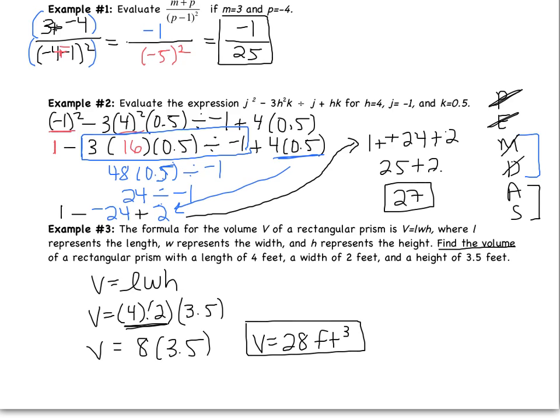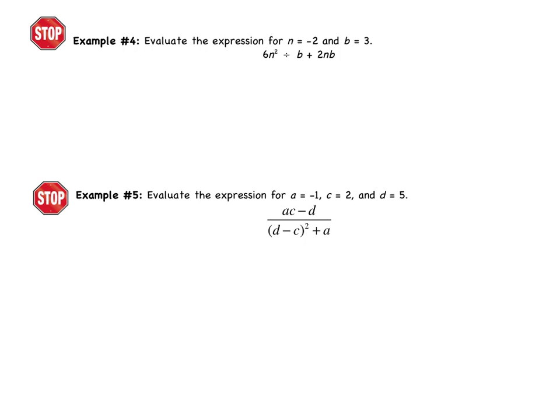For this section, a formula will be given and you just substitute the numbers in. Those were the two objectives: order of operations and using a formula. You have two more examples to complete. Flip the page for Example 4 — evaluate the expression for n equals negative 2 and b equals 3. Pause the video and do Example 4 on your own. Good luck.